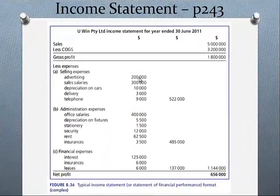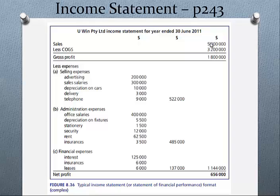Let's look at an income statement in more detail. At the top we've got the level of sales, and from that we take away the cost of sales — cost of goods sold. If I'm operating a clothing store, all the gross sales are calculated here, and all the cost of the clothes bought to put up for sale is represented here. This is really the engine room of the business, so the gross profit is a very important measure.